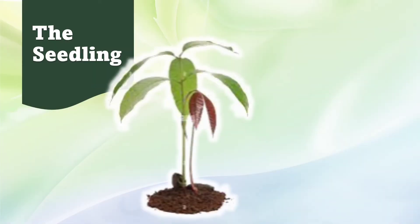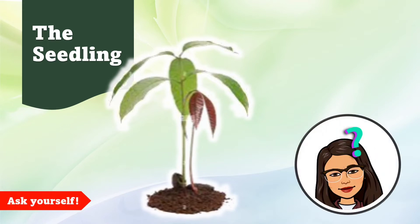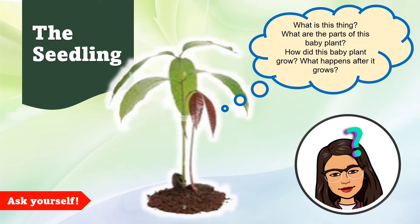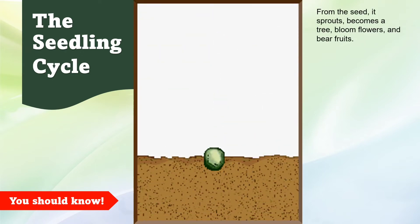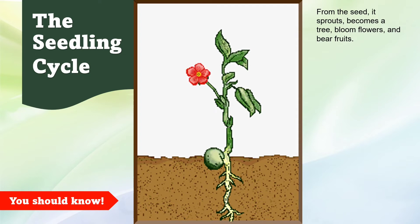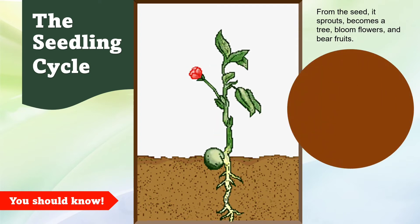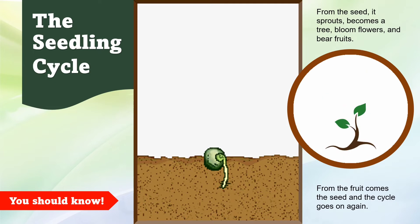Now take a look at this picture carefully. Ask yourself: what is this thing? What are the parts of this baby plant? How did this baby plant grow, and what happens after it grows? This is your seedling cycle. From the seed it sprouts, becomes a tree, blooms flowers, and bears fruits. From the fruit comes the seed, and the cycle goes on again.